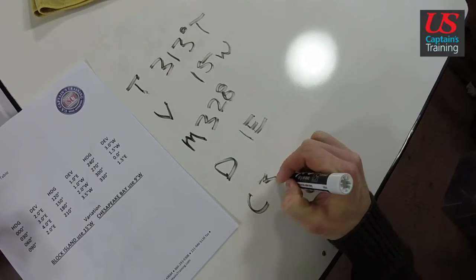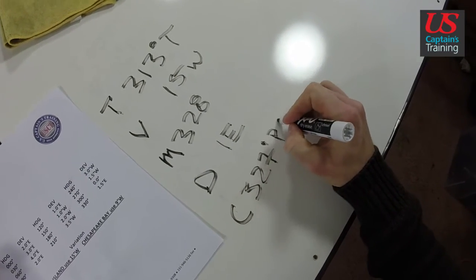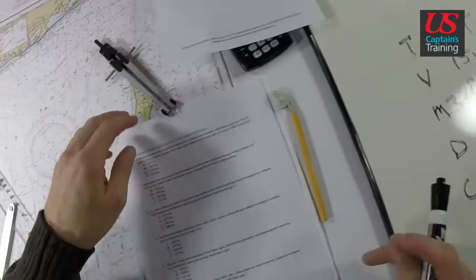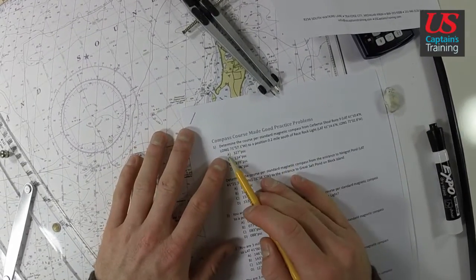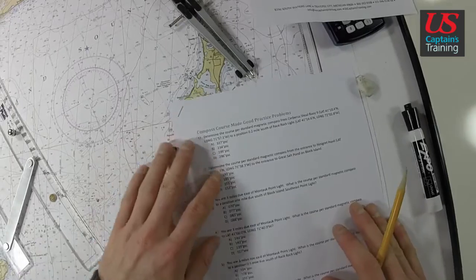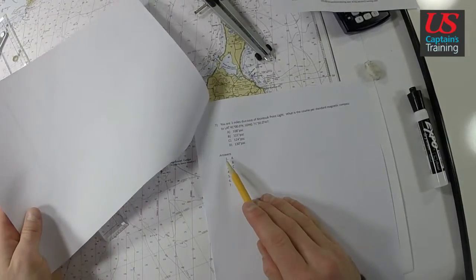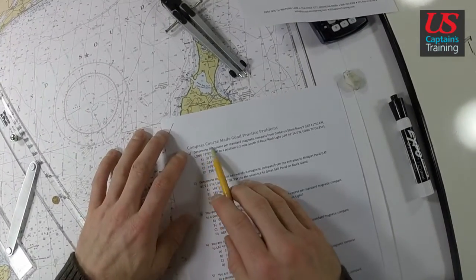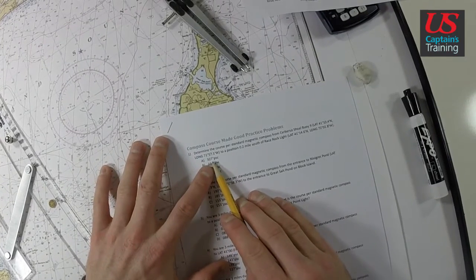Now let's see which answer is closest to this, 327. So A looks like we got it, A, 327. But just to make sure, we are going to check the answers. Answer number 1 is A. So the answer to Compass Course Made Good practice problem 1 is A, 327.